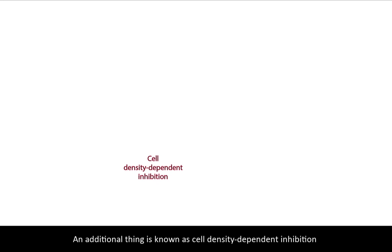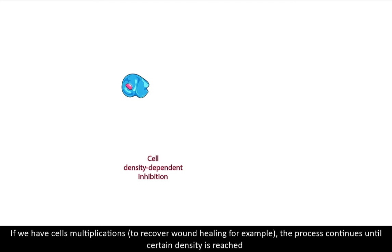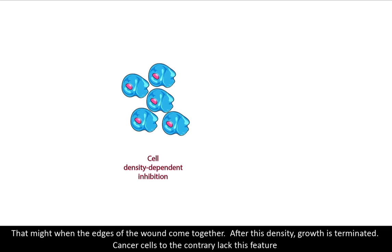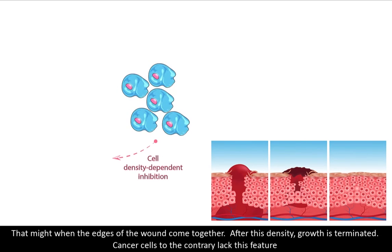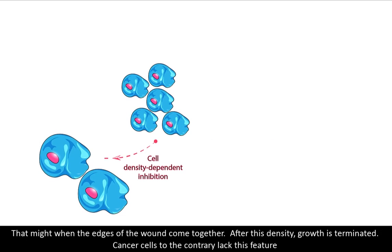An additional feature is known as cell density dependent inhibition. This principle means that normally there is a certain density required for tissue. If cell multiplication occurs to recover wound healing, for example, the process continues until a certain density is reached — that might be when the edges of the wound come together. After this density, growth is terminated.